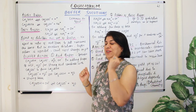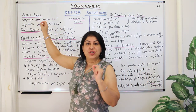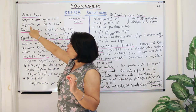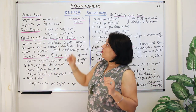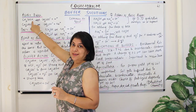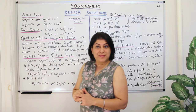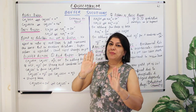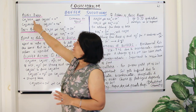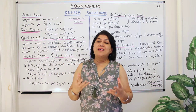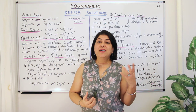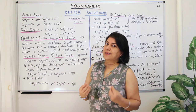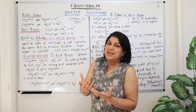An acidic buffer is formed by mixing a weak acid with its salt with a strong base — for example, acetic acid and sodium acetate. Buffer capacity is maximum when the concentrations of both the weak acid and the salt are equal (50% each). In other ratios, the solution still acts as a buffer, but its capacity may not be optimal.